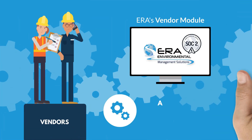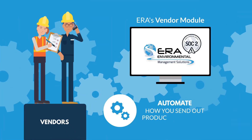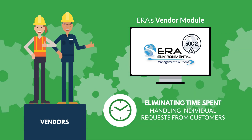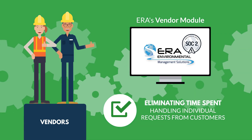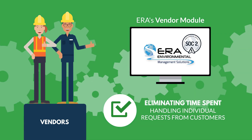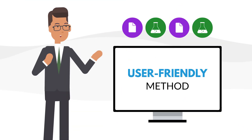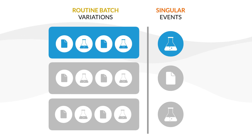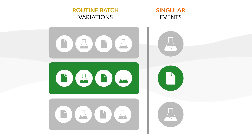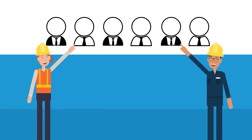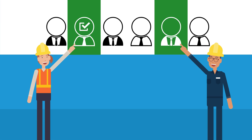ERA's Vendor Module lets vendors automate how they send out this data, eliminating time spent handling individual information requests from customers. The Vendor Module adopts a user-friendly method for disseminating product data. When alterations occur, be it due to routine batch variations or singular events, vendors can choose the relevant customers and facilities to send updates to.